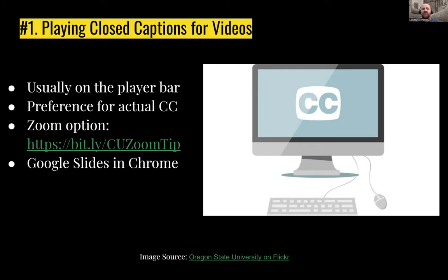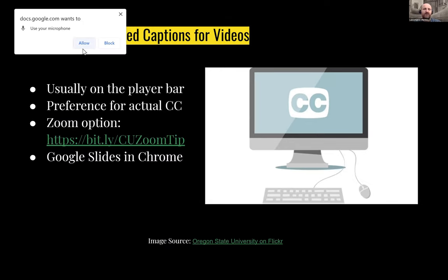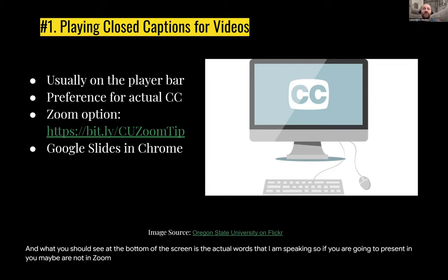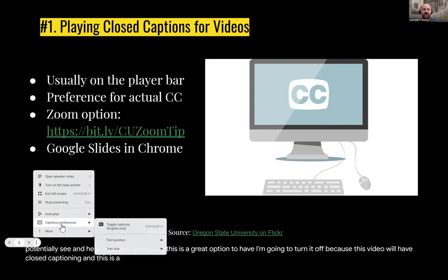There's a short video there on how to turn on closed captioning so that you and your students can access it during a session. If you're in Google Slides and using Chrome, you can actually activate closed captioning by coming down to the little toolbar and selecting caption preferences. You can turn them on, and it will ask you to allow access to your microphone — say yes. At the bottom of the screen, you should see the actual words being spoken. I'm going to turn it off now since this video already has closed captioning and the auto-captions lack punctuation.